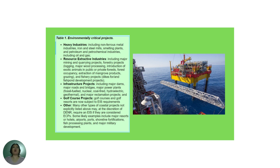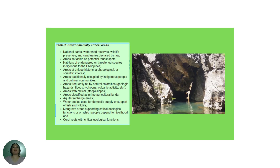Table 1 in the EIS system covers environmentally critical projects, which includes heavy industries, infrastructure projects, and golf course projects. Table 2 covers environmentally critical areas, which include national parks, aquifer recharge areas, mangrove areas, and coral reefs with critical ecological functions.